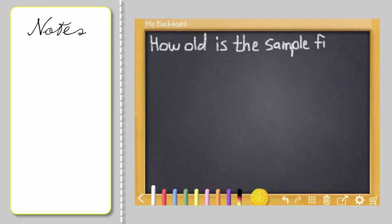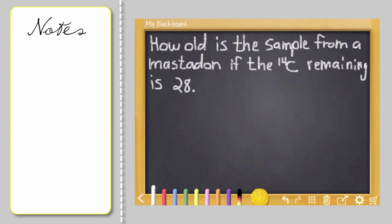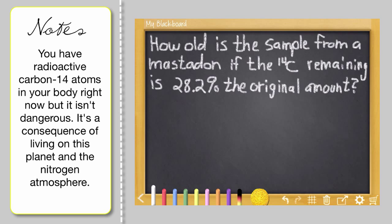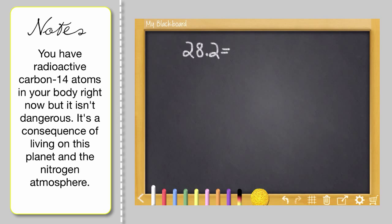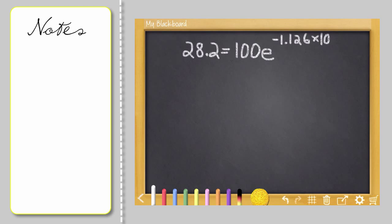Now that we have the rate of decay, you can answer all kinds of questions like how old some things may be. Let's say you've got a sample of a mastodon. The sample has 28.2% remaining, and you need to find out how old it is through carbon dating. Carbon dating measures how much of the carbon-14 isotope has decayed and changed into carbon-13. So here's the equation, and this time we're going to solve for T, the amount of time.